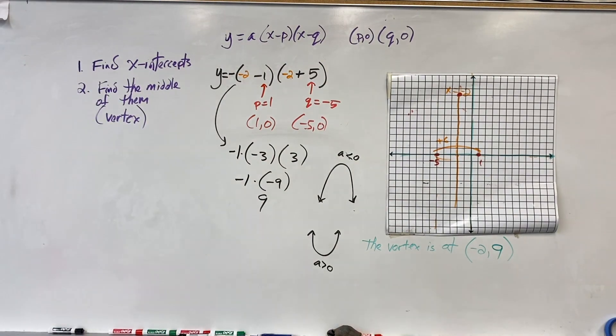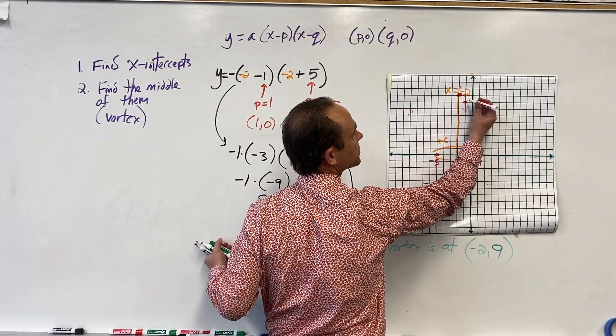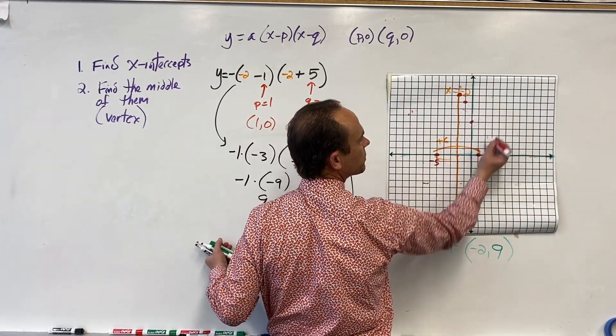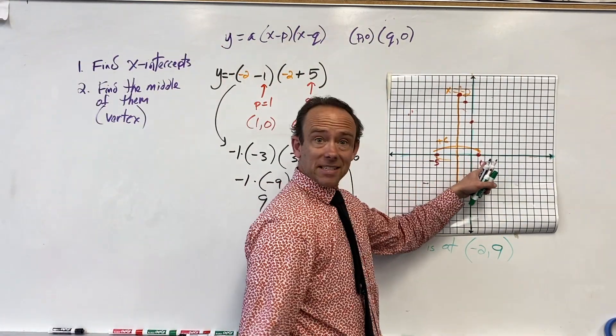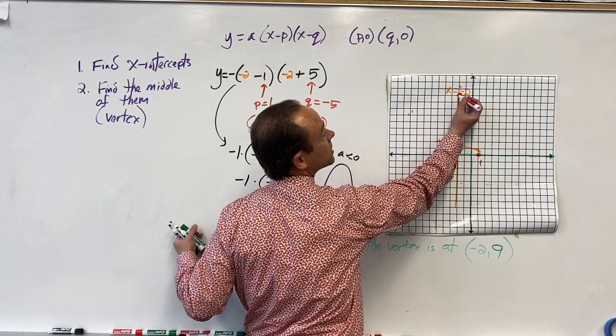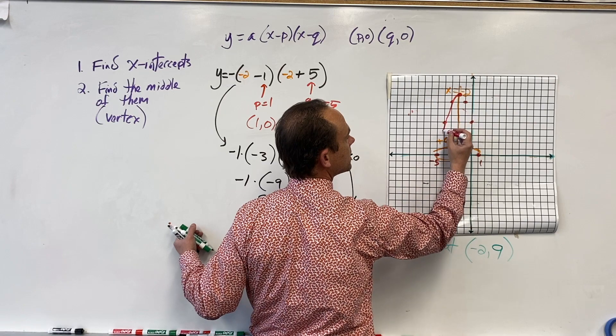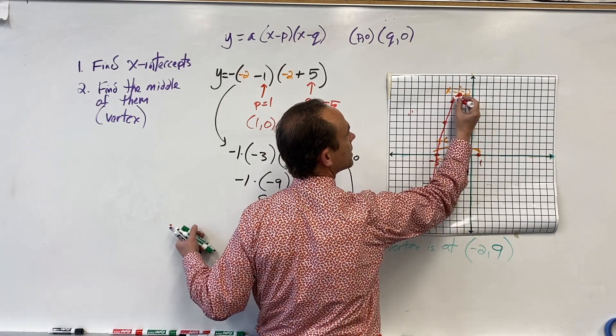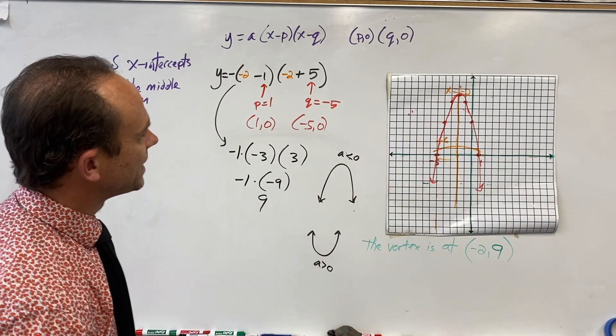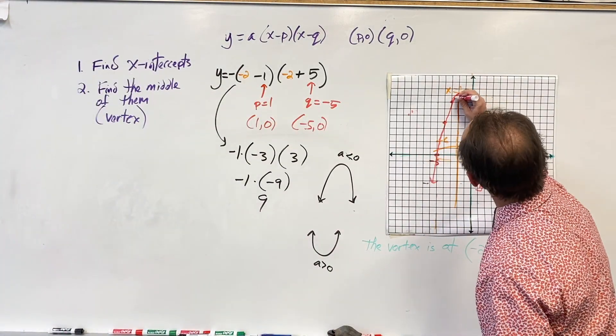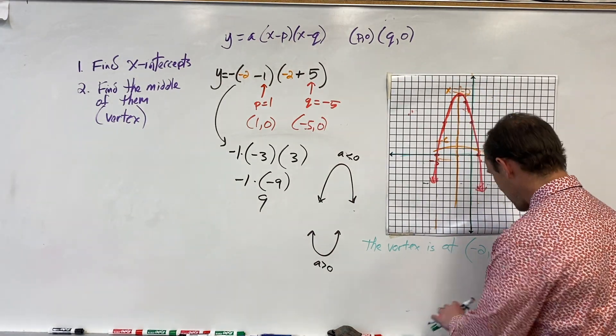I'm going to go over 1 down 1, over 1 down 3, over 1 down 5, and I'm back at the x-intercept. Let's mirror those points over the axis of symmetry and try to draw a beautiful graph.